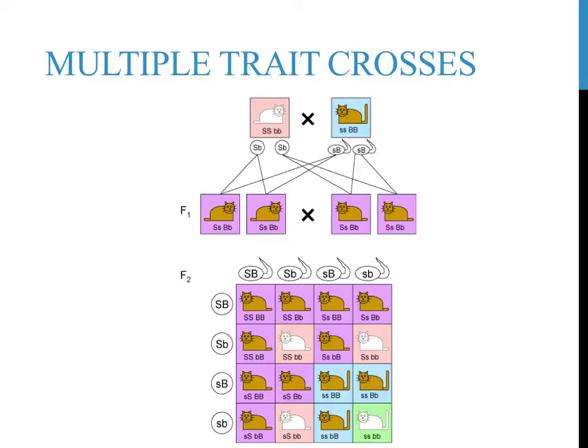For two traits, you can fill out a 4x4 Punnett square, as illustrated here, to determine the probability of these events occurring together. As the image shows, this can get a little bit complex. If you wanted to look at three or four traits simultaneously, things would get a bit ridiculous. For these reasons, we will use a different technique, referred to as the product rule, to evaluate more complex genetic crosses.